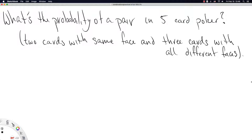The first example: what's the probability of a pair in five-card poker? A pair consists of two cards with the same face and three other cards, all with different faces.